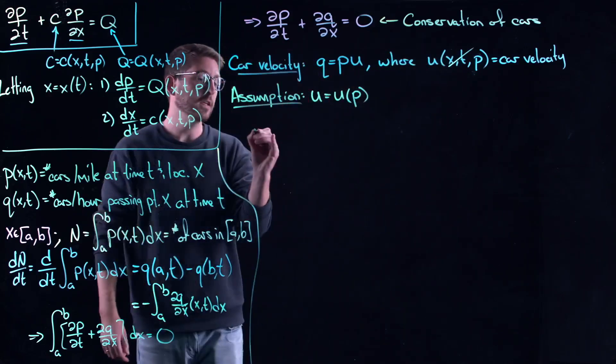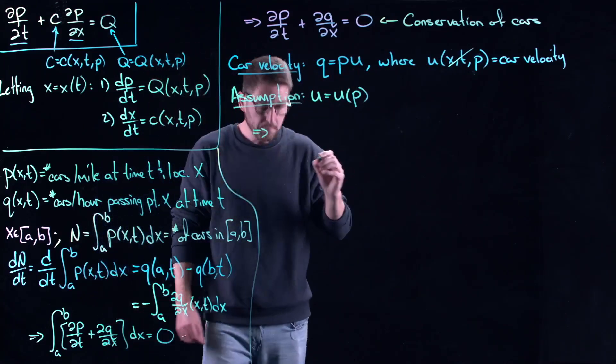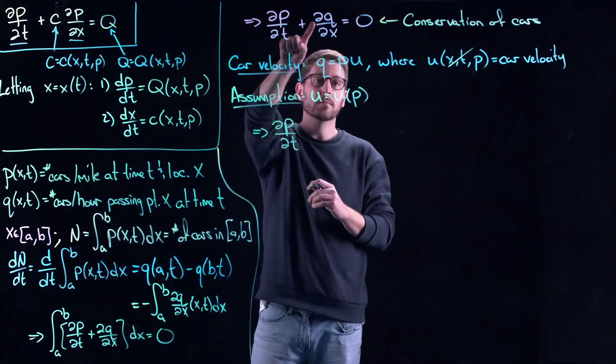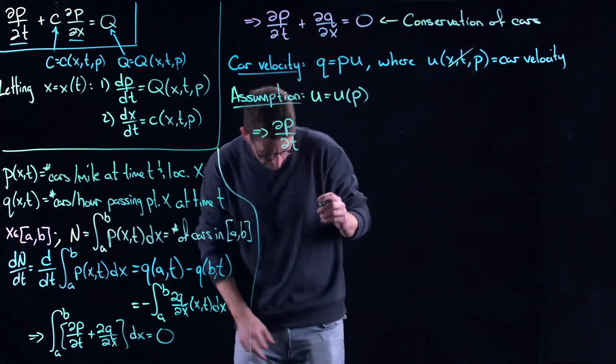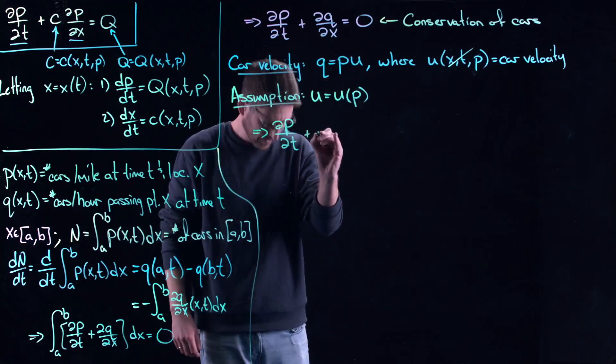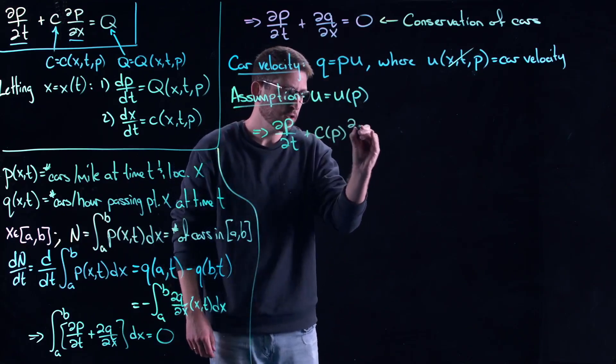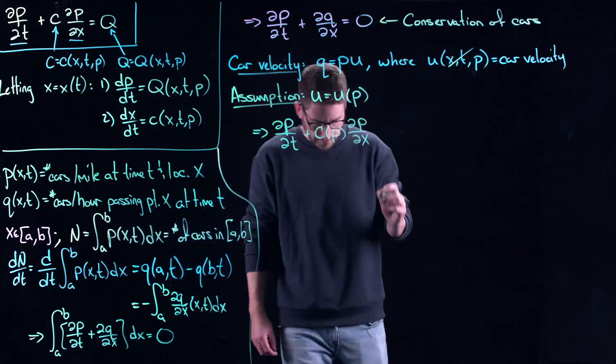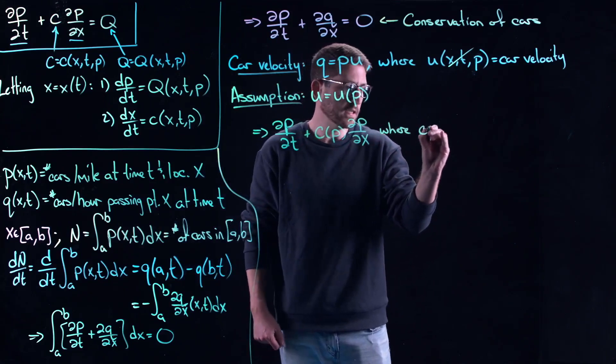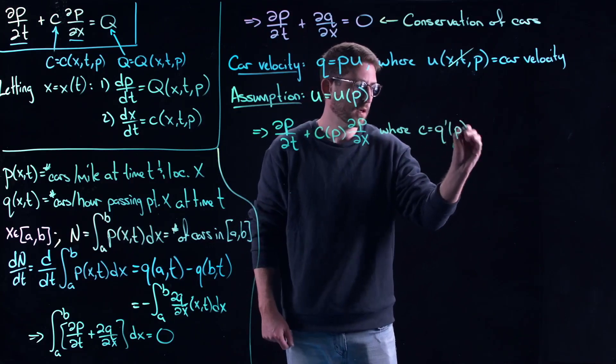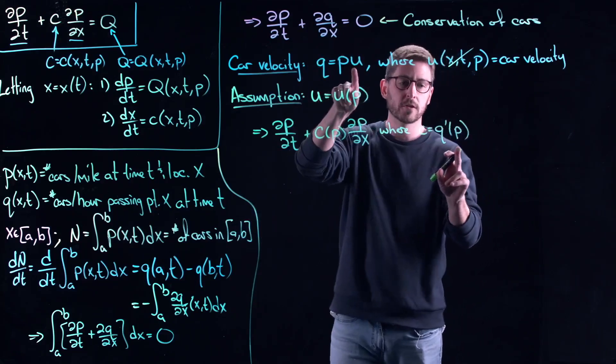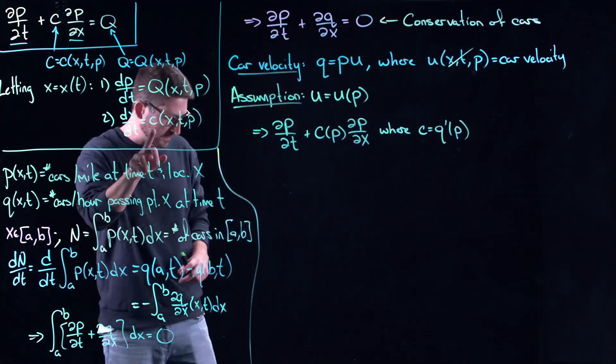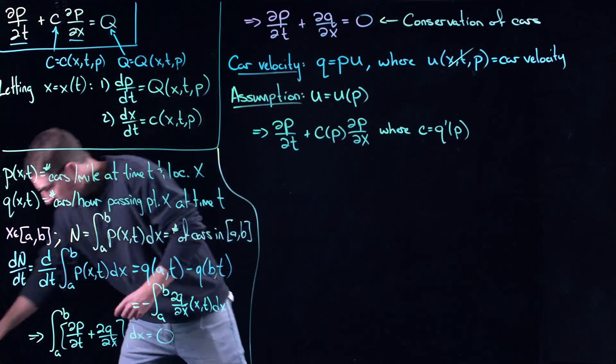But if you put all of these two things together now, this will give you a proper quasi-linear partial differential equation. Because essentially what you get here, now you have a relationship between q and p. And so now this gives you ∂p/∂t plus c of p times ∂p/∂x. And in this case, where c is equal to q prime of p. So here you have a relationship, q is now a function just of p. You differentiate that thing, you get this new c, which we've already seen is sort of related to the speed along the characteristics.